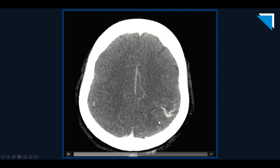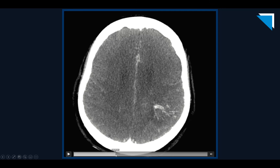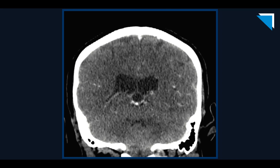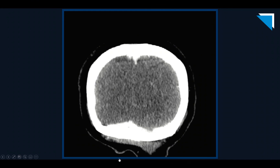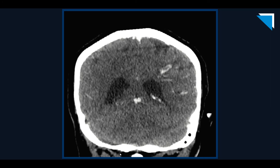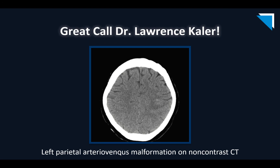A coronal reformat shows the same findings. Dr. Kaler correctly identified this as an arteriovenous malformation. Great call, Dr. Kaler. The teaching point here is that not all white matter hypoattenuation in the ER is an acute infarction, as in this case of an arteriovenous malformation caught on a non-contrast CT.